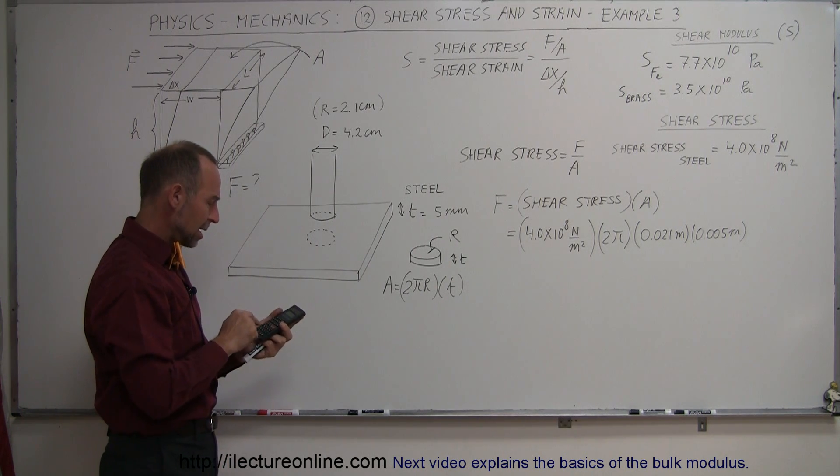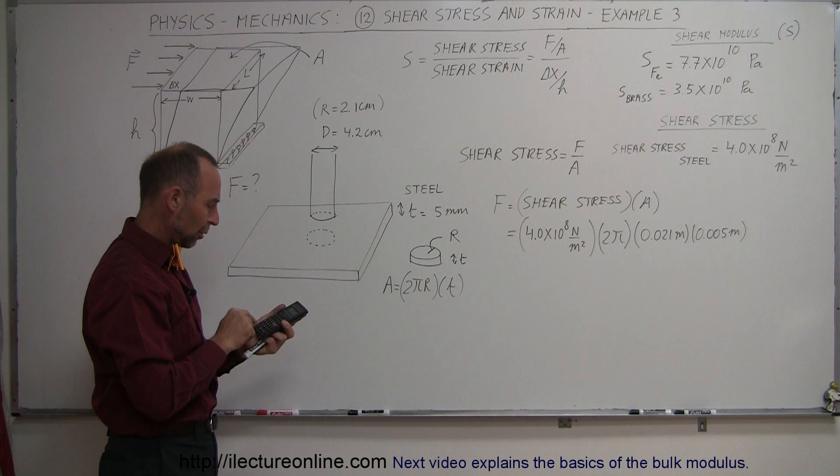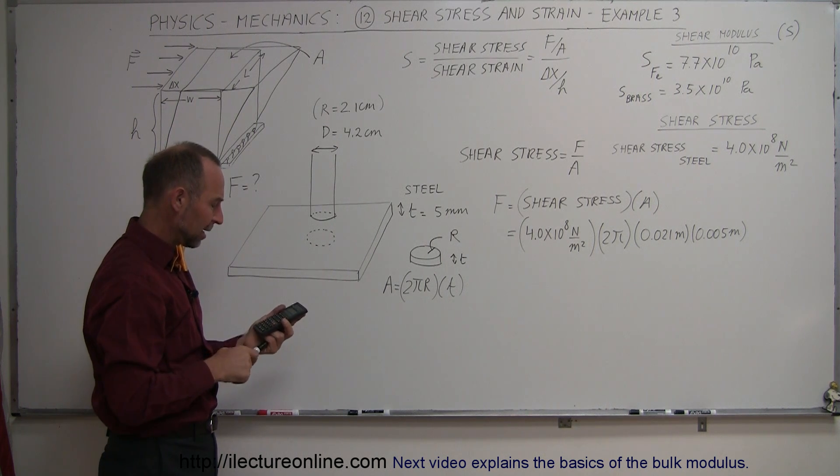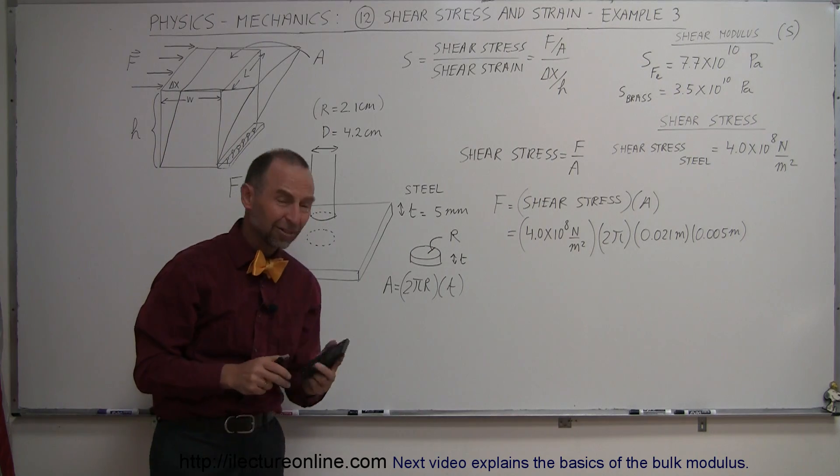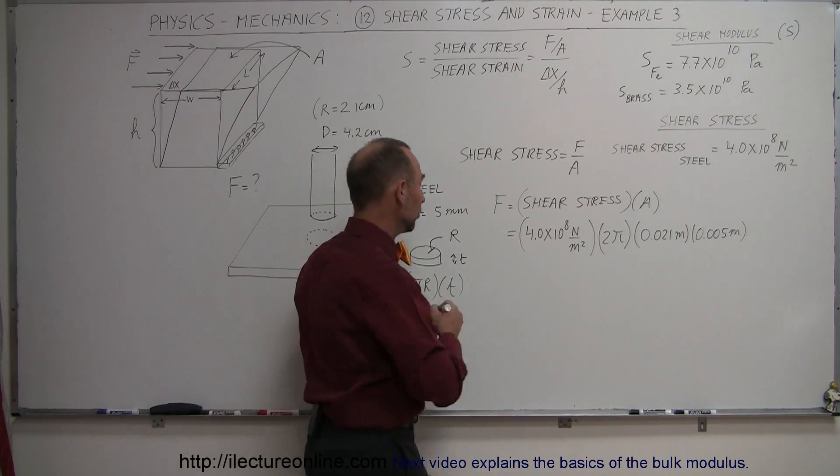So 4×10⁸ times 2 times π times 0.021 and times 0.005 equals, and that's still a formidable force of 264,000 newtons.